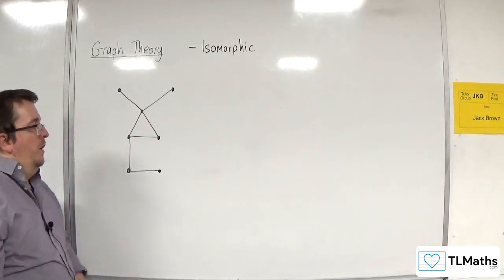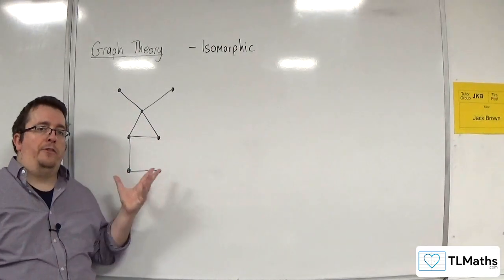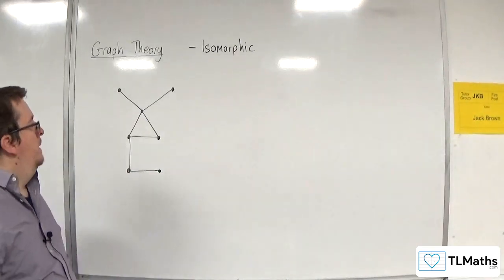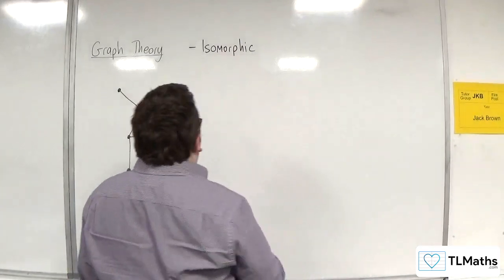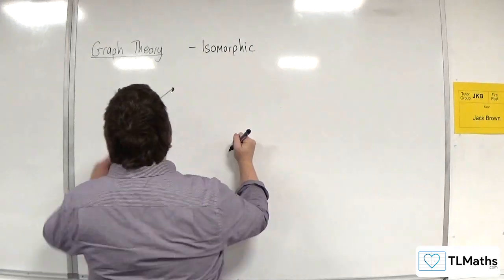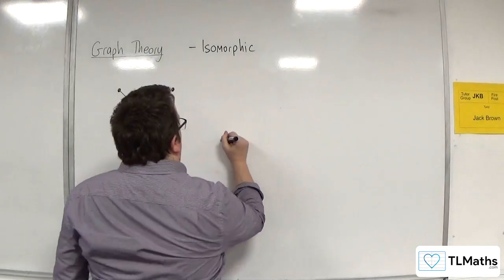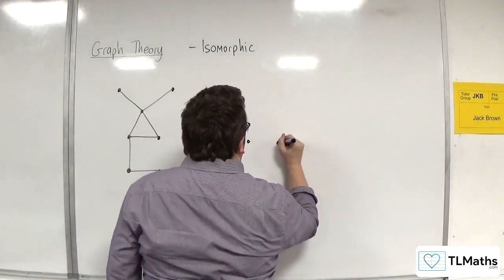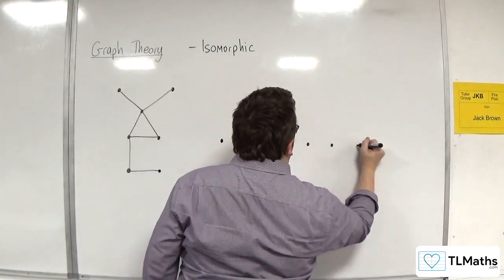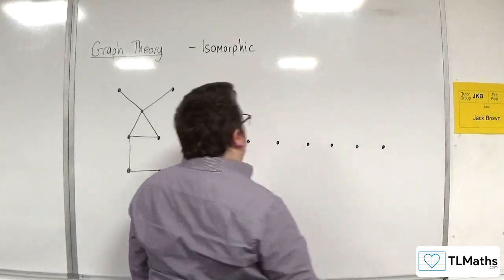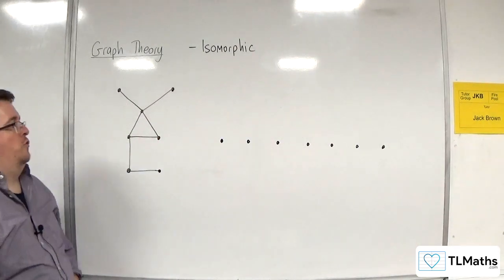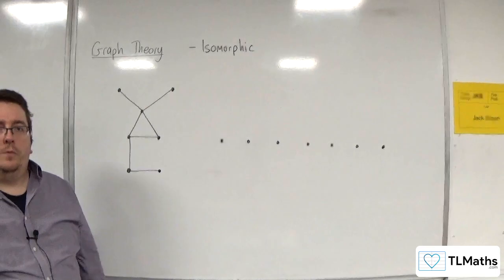Okay, so I could draw an isomorphic graph to this one. So let's say I've got, how many edges have I got? I've got 1, 2, 3, 4, 5, 6, 7. So theoretically, I should be able to draw it just with these points here.